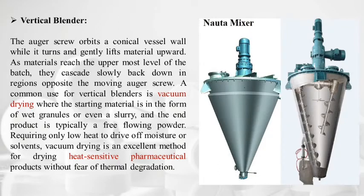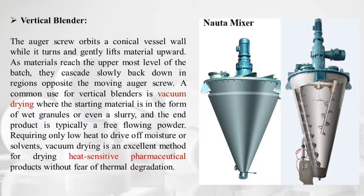In vertical blenders, an auger screw orbits a conical vessel wall, lifting material upward. When material reaches the uppermost level, it cascades slowly back down in the region opposite the moving auger screw. A common use of the vertical blender is vacuum drying where the starting material is wet granules or a slurry, and the end product is typically a free-flowing powder. Vacuum drying is an excellent method for drying heat-sensitive pharmaceutical products without risk of thermal degradation.